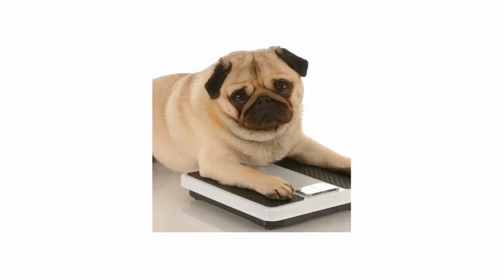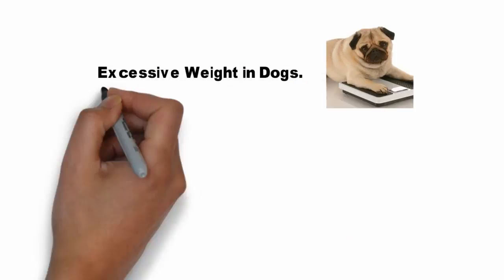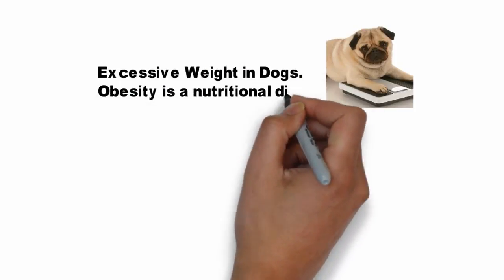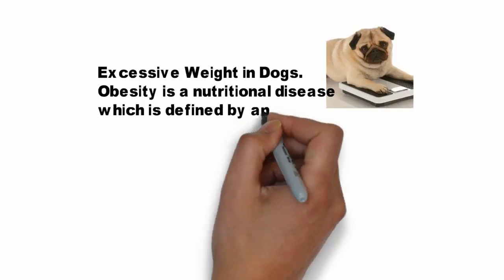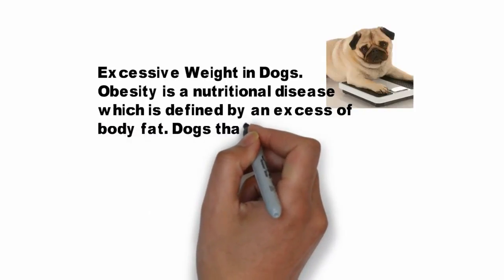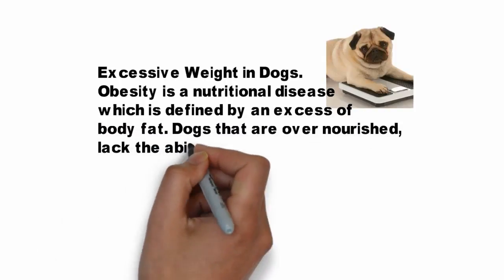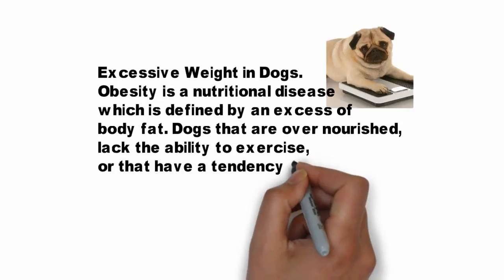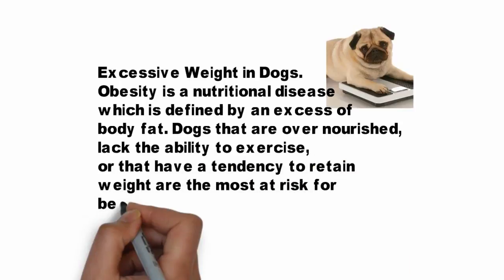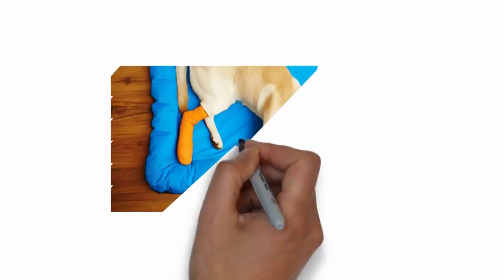2. Obesity. Obesity is a nutritional disease defined by an excess of body fat. Dogs that are overnourished, lack the ability to exercise, or have a tendency to retain weight are the most at risk for becoming obese.